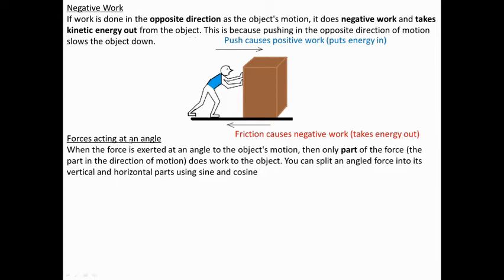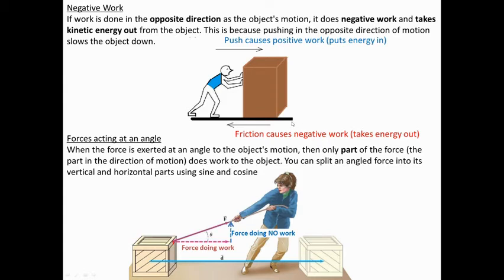When force is acting at an angle to the direction of motion, only the part of the force that is in the direction of motion counts. We're not going to do the math — it involves a little sine and cosine — but if this person is pulling up at an angle, the force they pull over with is in the same direction as the object moves, so that amount of force multiplied by the distance moved equals the work done. However, part of that force is also lifting up, but since the object didn't actually move up, that component does no work.